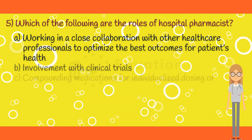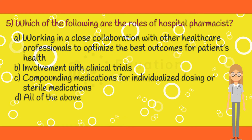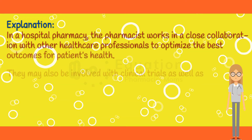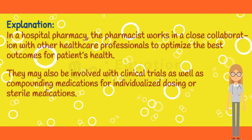Question 5. Which of the following are the roles of hospital pharmacist? Option A: Working in close collaboration with other healthcare professionals to optimize the best outcomes for patients' health. Option B: Involvement with clinical trials. Option C: Compounding medications for individualized dosing or sterile medications. Option D: All of the above options. The correct answer is option D. In a hospital pharmacy, the pharmacist works in close collaboration with other healthcare professionals to optimize the best outcomes for patients' health. They may also be involved with clinical trials as well as compounding medications for individualized dosing or sterile medications.